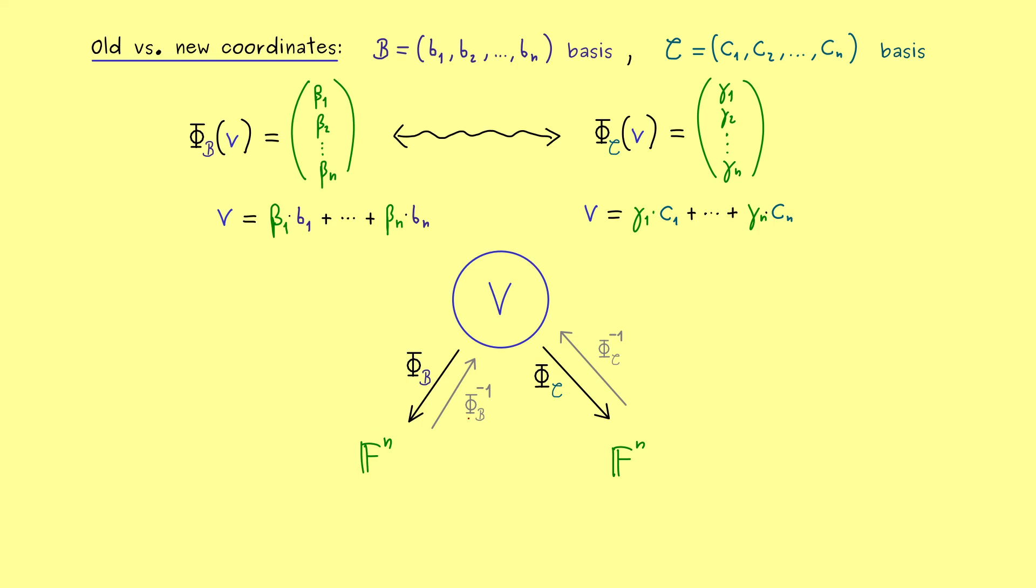Therefore if we change the basis from B to C we want to go directly from F^n to F^n. And maybe let's call this map lowercase f. And from the discussion before we also already know we can always go backwards. So we also have the inverse.